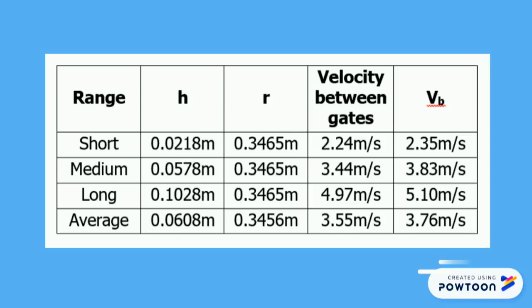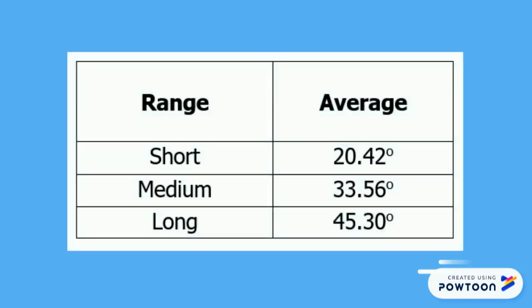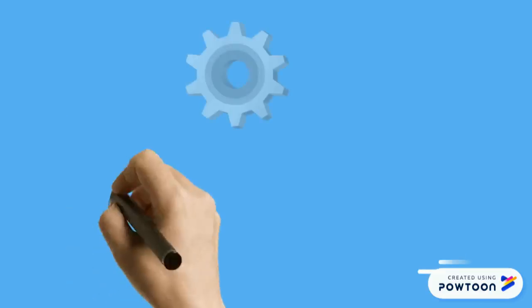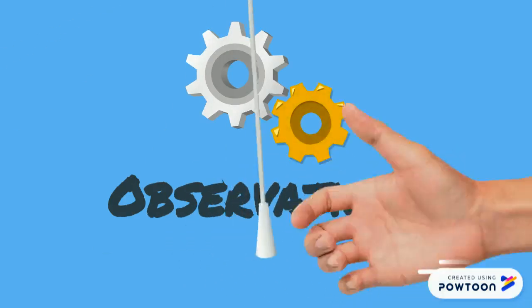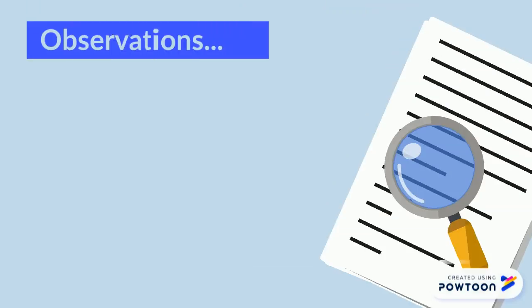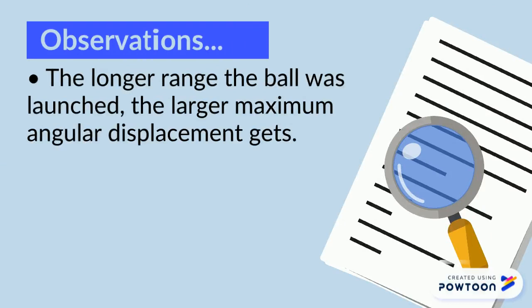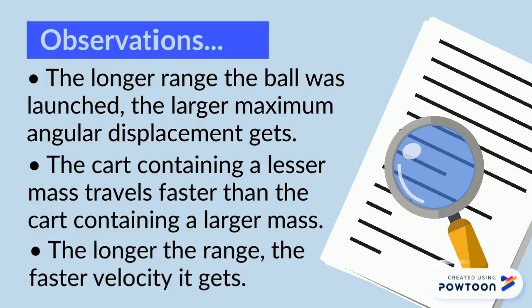The second table presents the maximum angular displacement as observed in the gathered data. The longer the range the ball was launched, the larger the maximum angular displacement, the higher the height of the pendulum, and the faster the velocity it gets.